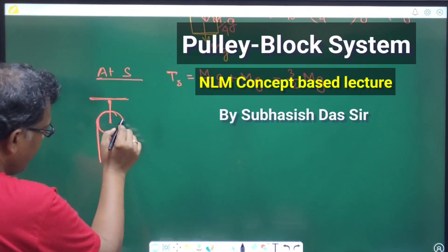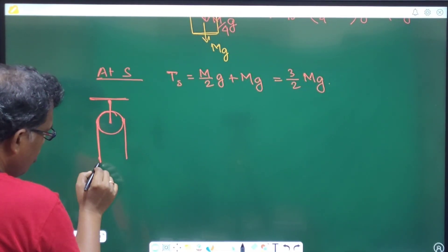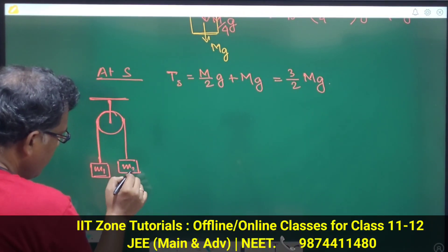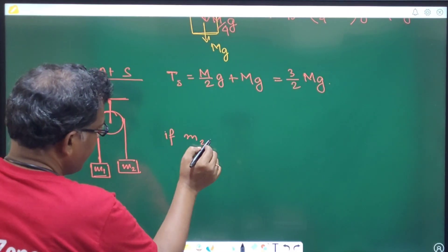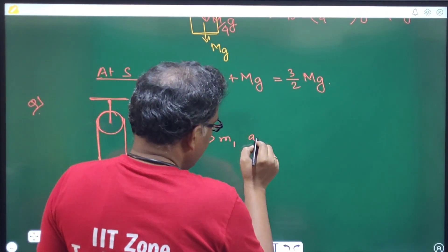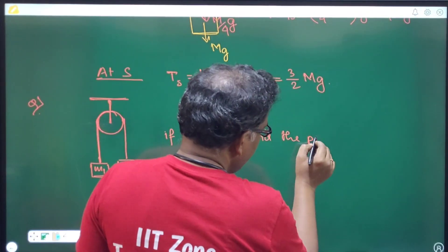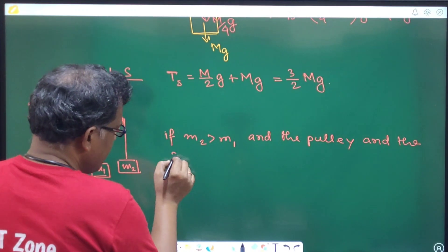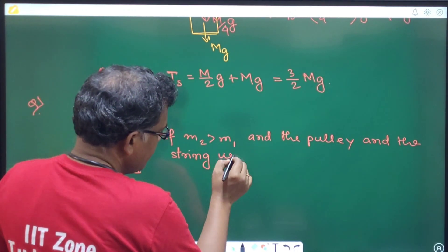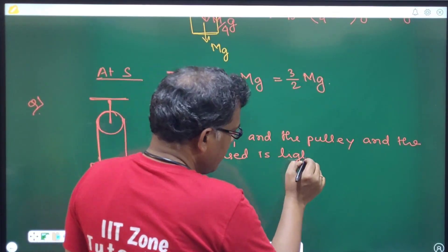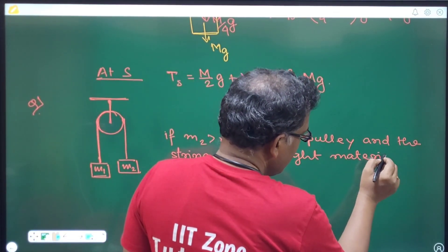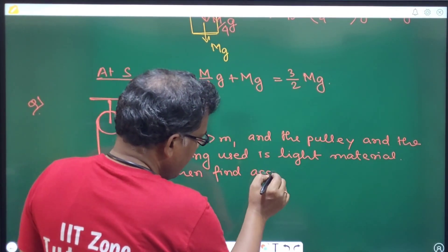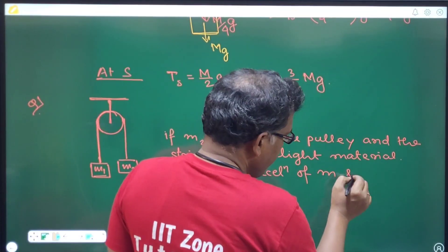Suppose with the help of a pulley we suspend two blocks of mass M1 and M2. Assuming M2 is heavier than M1 and the pulley and string are made of light material, find the acceleration of M1 and M2.